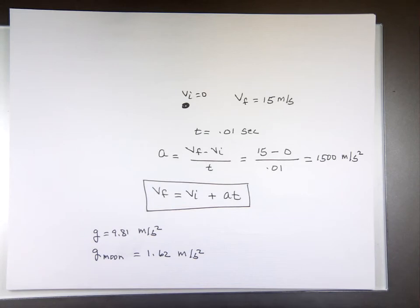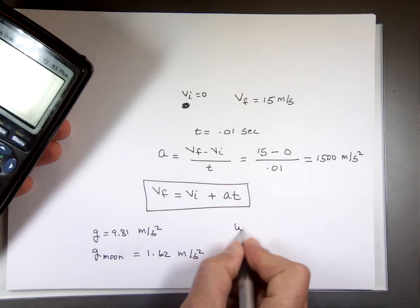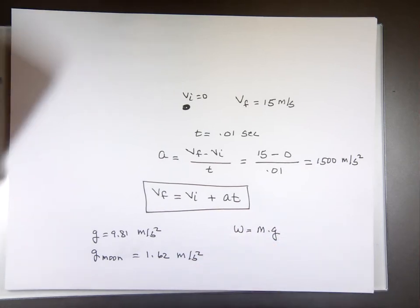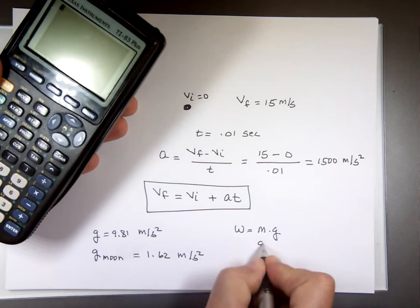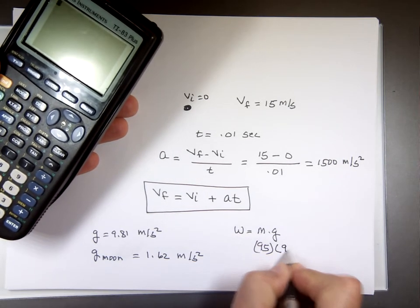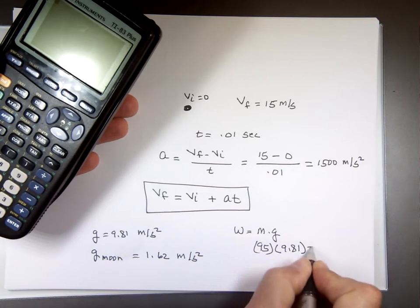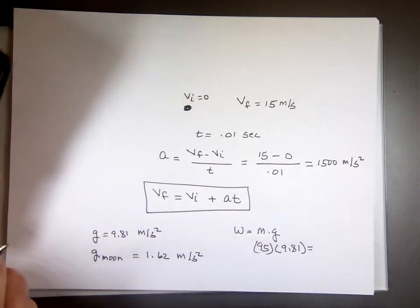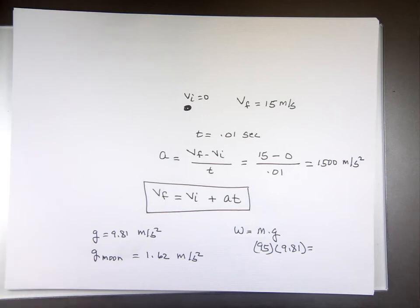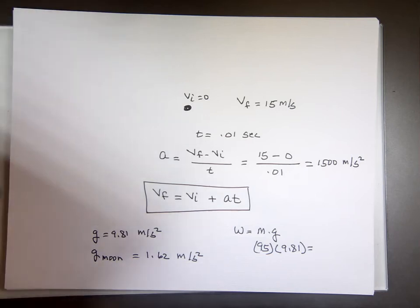Weight is mass times gravity. So my weight equals my mass times gravity. My mass is roughly 95 kilograms, times 9.8 — that's how much I weigh on Earth in Newtons. Weight is a force — it comes out to roughly 932 Newtons.